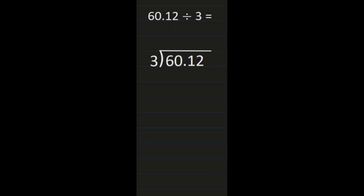Our next example, we have 60 and 12 hundredths divided by 3. So the 60 and 12 hundredths goes on the inside because we're dividing that by 3. Our first step again is to bring the decimal point straight up so we have it in the right place in our quotient, so we can carefully work through our steps. So after I bring that decimal point straight up, I start with division. 6 divided by 3 is 2. I multiply — 2 times 3 is 6. Subtract — I get 0.